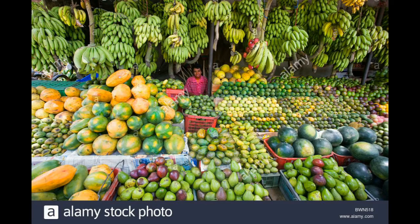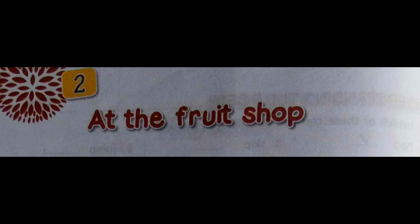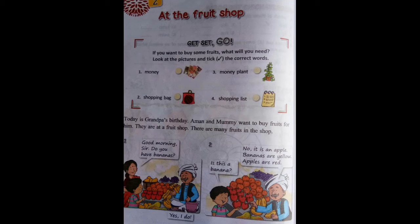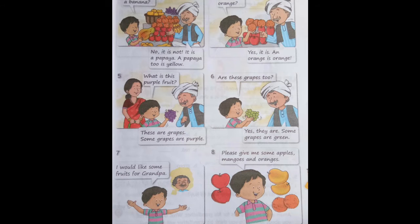We will continue the lesson at the fruit shop. Children, you all remember that we started the lesson at the fruit shop last class. In our last class, we learned how Amman and his mother go to the fruit shop to buy fruits for grandpa's birthday. We also learned how Amman started identifying different types of fruits at the fruit shop.